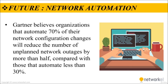Programmable, software-based automation technologies can help your team better support your organization's digital initiatives. Gartner believes organizations that automate 70–80% of their network configuration changes will reduce the number of unplanned network outages by more than half, compared with those that automate less than 30%.